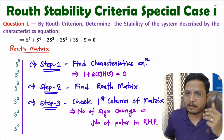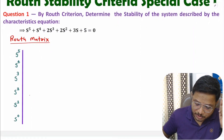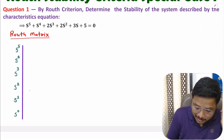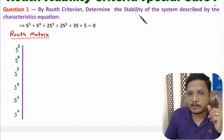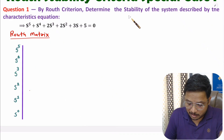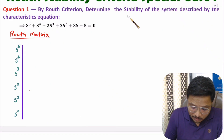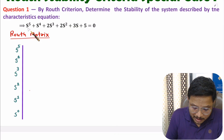Let us solve the first question. In the first question we have a characteristic equation and we need to identify stability. The first step is already solved in the question itself. Now we need to identify the Routh matrix, which is based on the order of the equation.